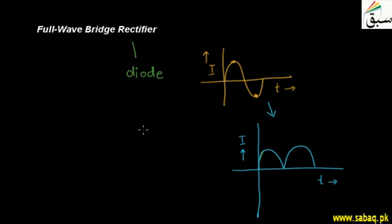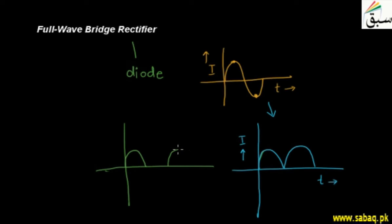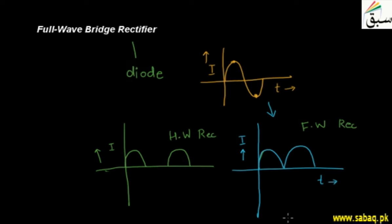We also have rectifiers which are half wave rectifiers, meaning those rectifiers allow only the half cycle in one direction and the output comes in one direction — the negative half cycle is cut. So I represent here that this is a half wave rectifier, abbreviated as HW, and the other waveform is the full wave rectifier.